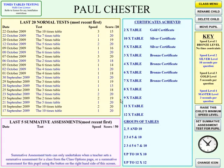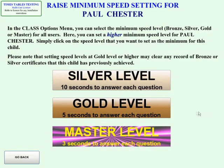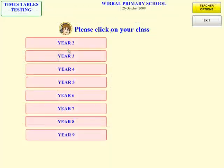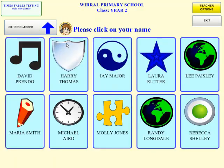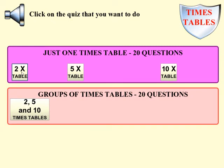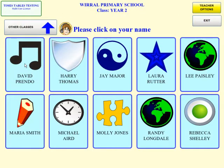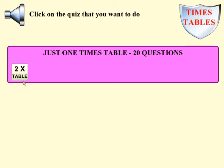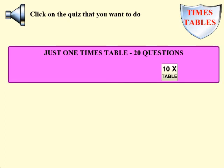For more able pupils, you have the option to raise the difficulty level, to ensure that they are working at an appropriate level. You can also restrict which tests are available for your class. For example, if you have a Year 2 class, you may only want them to be able to select from the 2, 5 and 10 times tables. The software can be further customized so that each pupil has to get full marks on one test before they can move on to the next test.